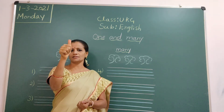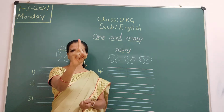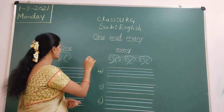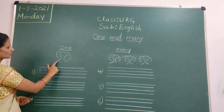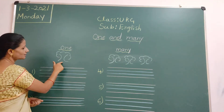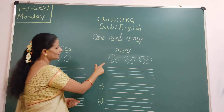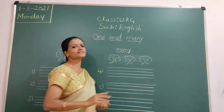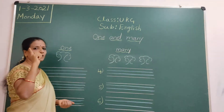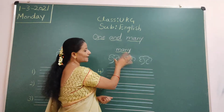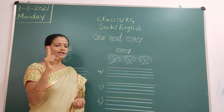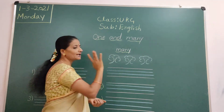See here — one finger, many fingers. So for example: one tree. What is this picture? Tree. One tree here, three trees. That is many. One tree, many trees.